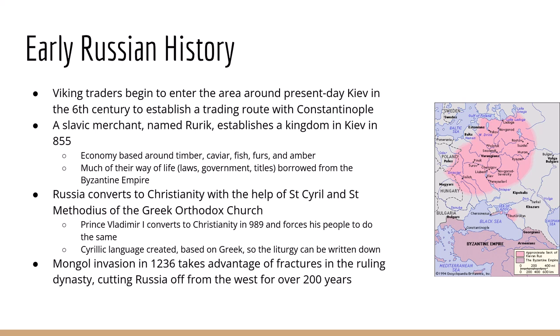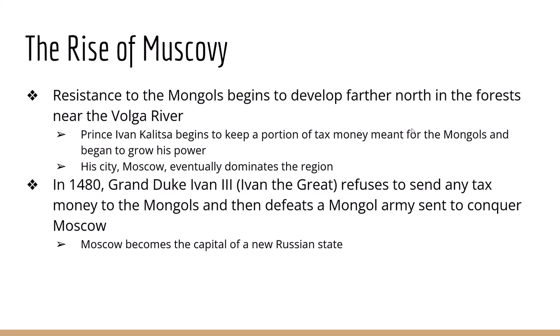The Kyivan Rus had no law allowing the firstborn to automatically succeed, so many princes set up their own governments and succession was cutthroat. Then the Mongols invaded in 1236. The government was already weak and fractured, and the Russian aristocracy could not mount a defense. Russia was cut off from the West for the next 200 years as the Mongols took over — meaning the Renaissance basically missed Russia completely. The Mongols further encouraged political fragmentation. Resistance eventually developed further north in the forests of the Volga River under a prince named Ivan Kalita, chief tax collector for the Mongols, who kept a portion for himself. His power grew and eventually his city — Moscow — dominated the northern region.